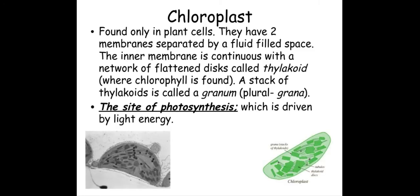Chloroplasts can only be found in plant cells and are the site of photosynthesis. You do need to be aware of the internal structure: there is a double membrane on the outside, and inside we have thylakoid membranes which form stacks called grana. We also have the fluid inside called the stroma.